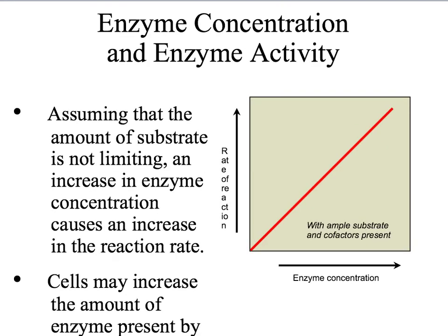All this changes if you add more enzymes. Even if you increase the substrate, adding enzymes means adding active sites, so your reaction can go faster and faster. At some point your rate of reaction will be limited by the amount of enzymes, but if you have an unlimited amount of substrates and you just keep adding enzymes, your rate of reaction is just going to take off.